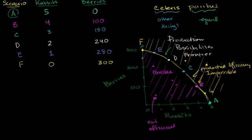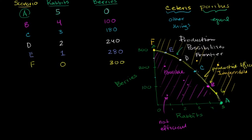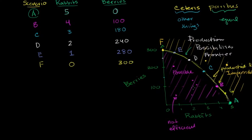Another way to think about productive efficiency is that as soon as you're at any point on that curve, if you want any more of one of these things, you have to give up some of the other. So for example, if you're at point C and you want more rabbits — even one more rabbit — you're going to have to give up some berries. Or if you're at point C and you want more berries, you're going to have to give up some rabbits. And that's true of any point on the production possibilities frontier.